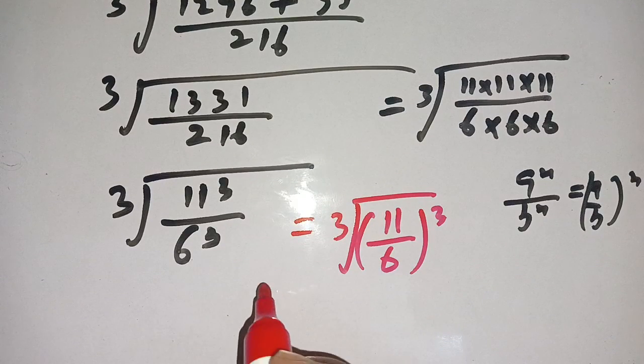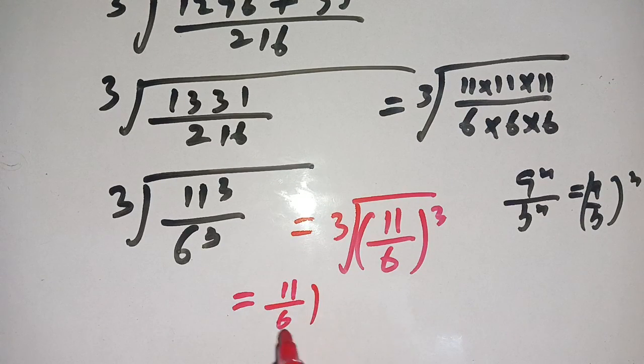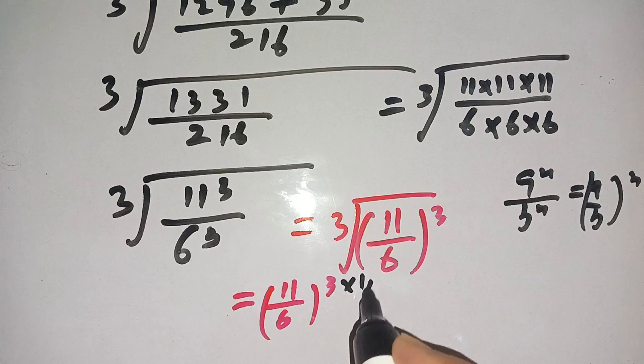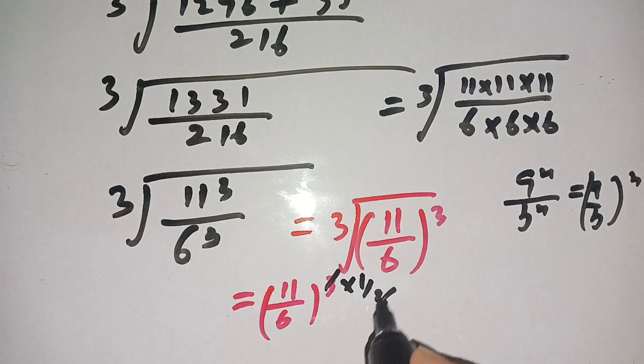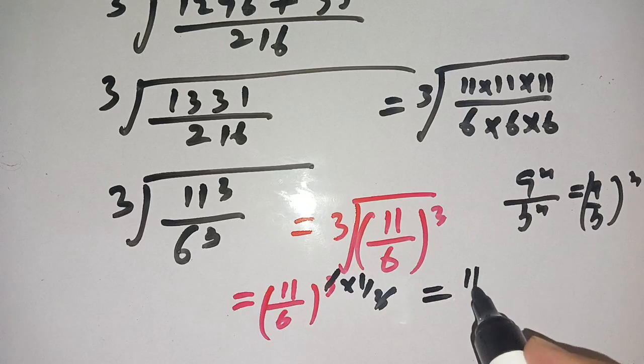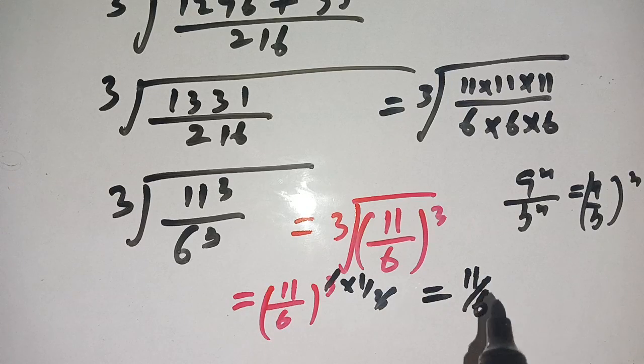On the next step we get 11 divided by 6 to the power 3, whole to the power 1 divided by 3. This 3 and this 3 can be canceled, so if we cancel out it is equal to 11 divided by 6. This is the simplest form of this radical problem.